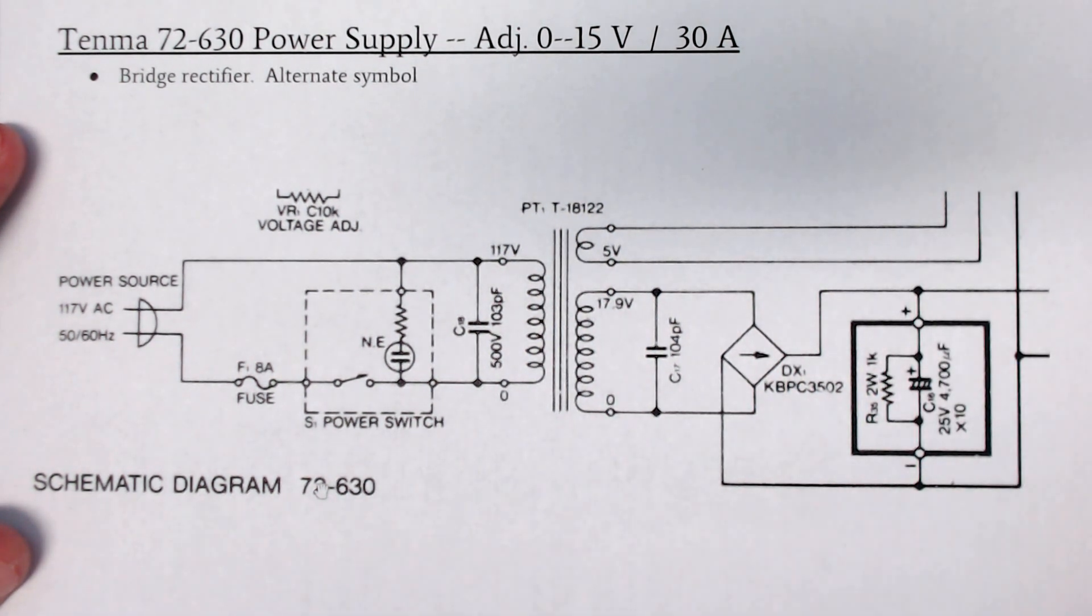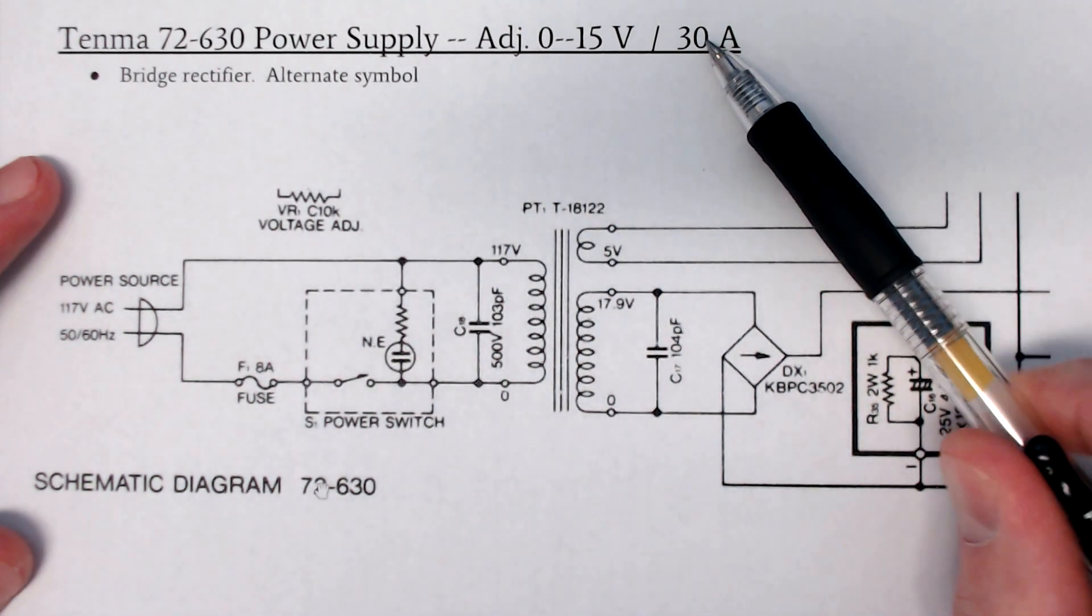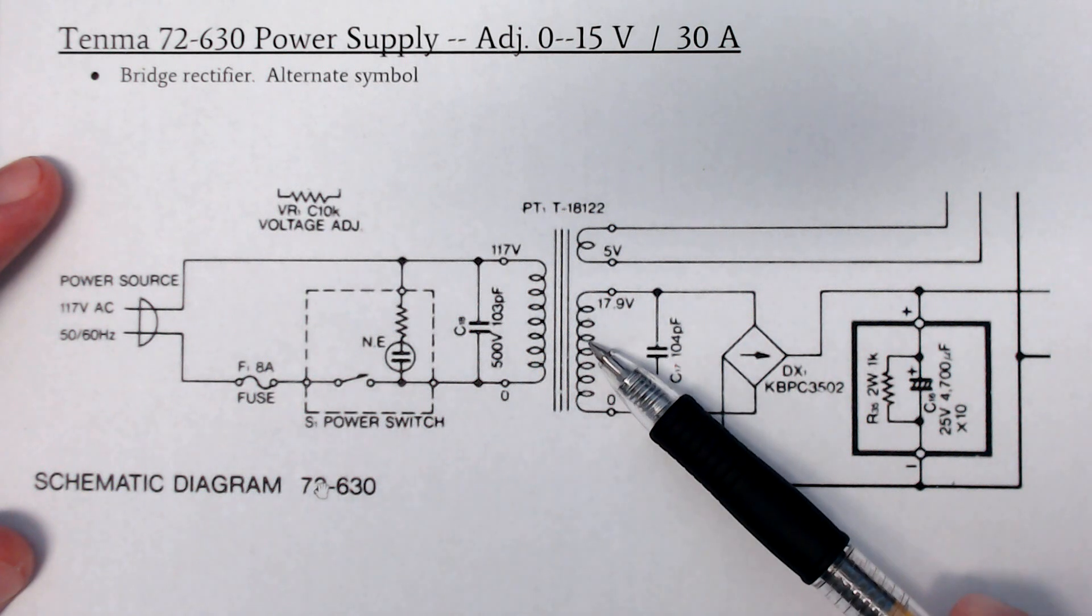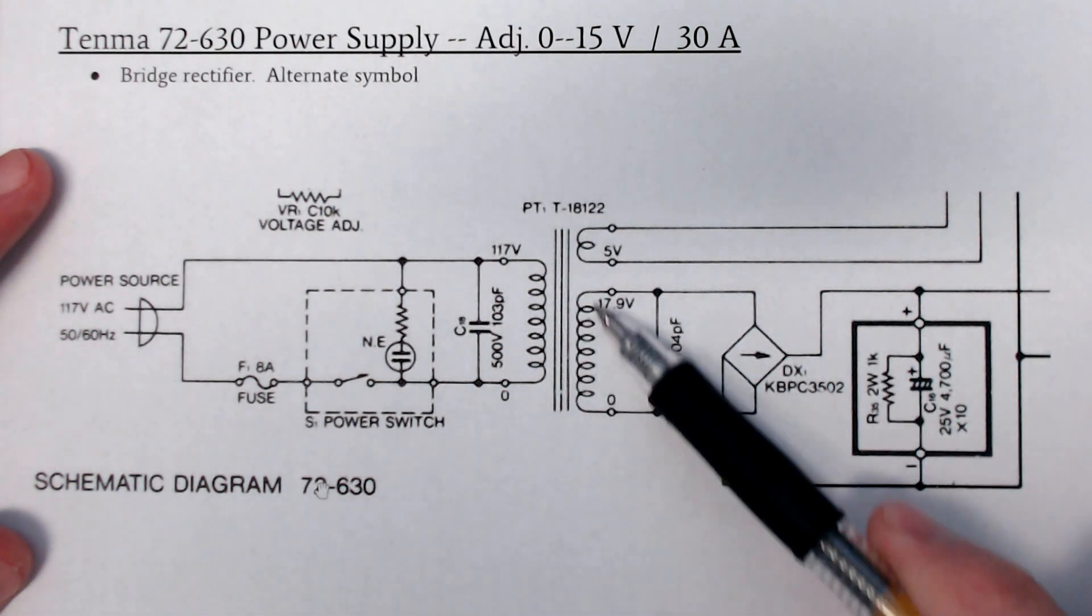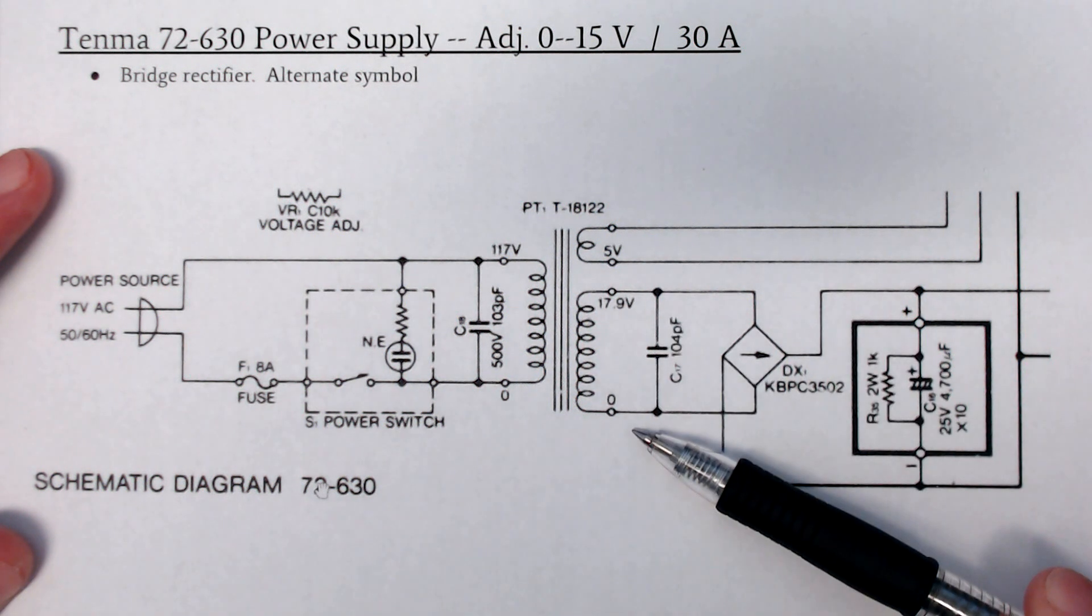Kind of a nominal 12 volt or 13.8 volt power supply. At 30 amps, this thing is beefy. These secondary windings are quite large, 12 gauge wires, at least 12 or 10 gauge wires coming off.